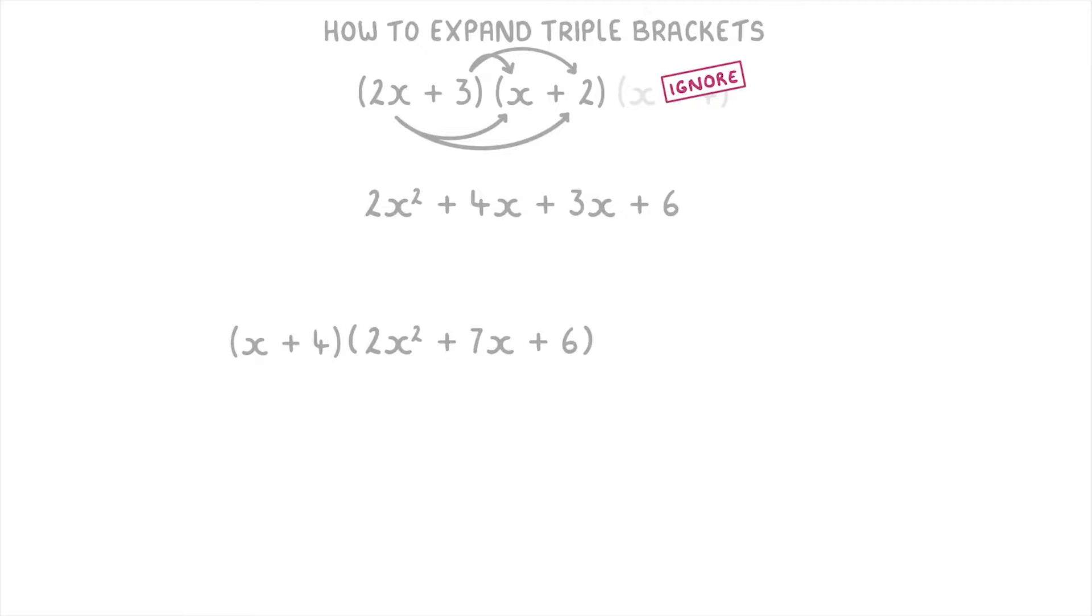This means that we can put arrows from the x to all of these terms in the bigger brackets and then do the same thing for the 4. So for the x we've got x times 2x squared which is 2x cubed, x times 7x which is 7x squared, and x times 6 which is 6x.